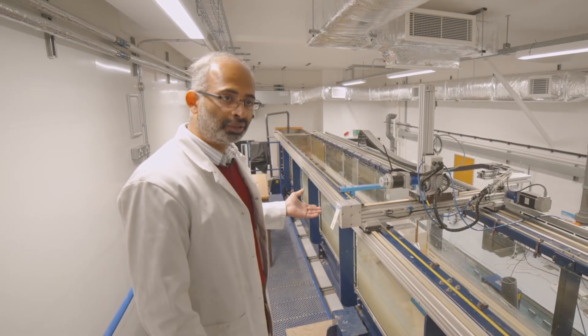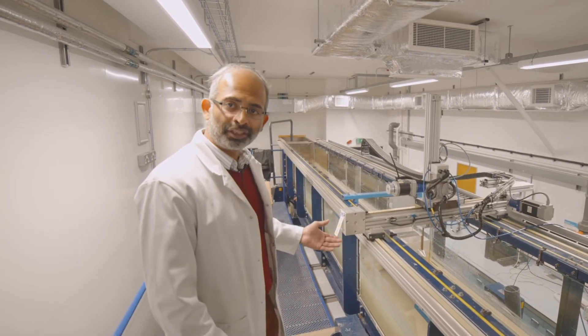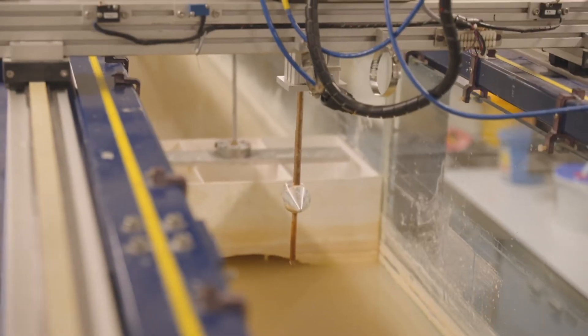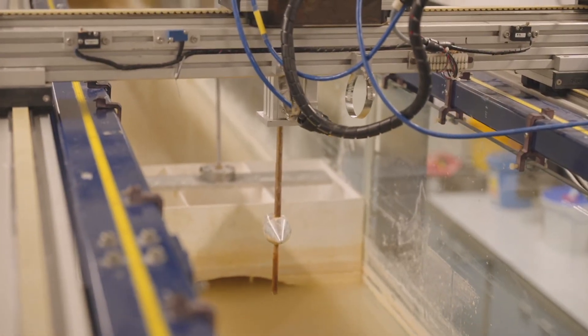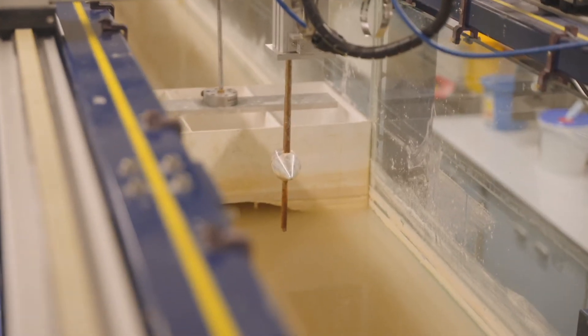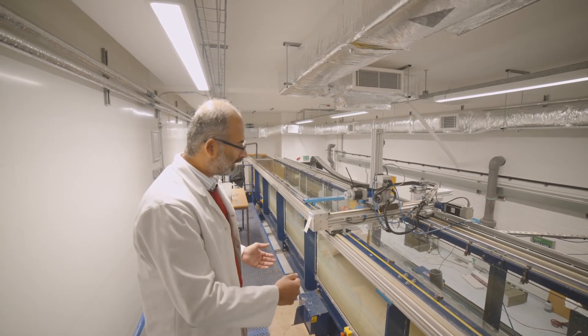Here we have a traverse system on which is mounted an instrument for measuring flow velocities. The traverse can move in all three directions—x, y, and z—so we can in principle measure anywhere within the flow volume. We can measure velocities in three dimensions anywhere within the flow volume in the tank.